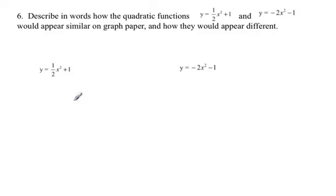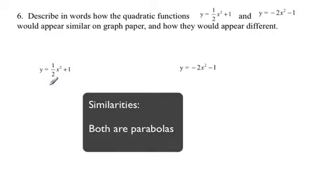We have to look at the equations and get some idea of what these are going to look like. The first thing you should note, as far as similarities go, is that they both have x squared and a coefficient that's not zero for that x squared term, which means that these are going to be parabolas. So the first similarity is that both are parabolas.